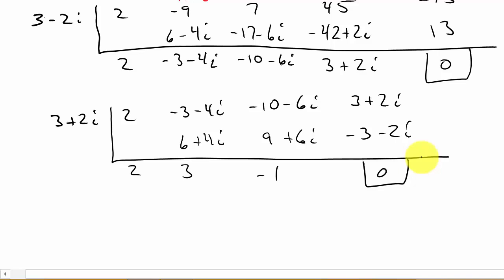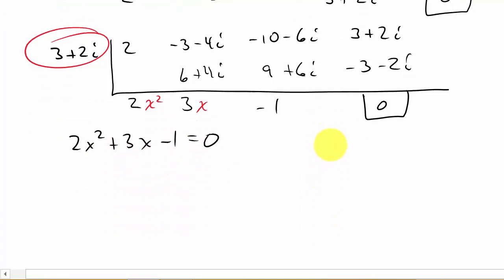All right. So there you go. Now you have a 2x squared plus 3x minus 1. We're breaking it down. So there's a zero. See, here's a zero, here's a zero. And now we can take this, the 2x squared plus 3x minus 1, set it equal to 0 and solve.